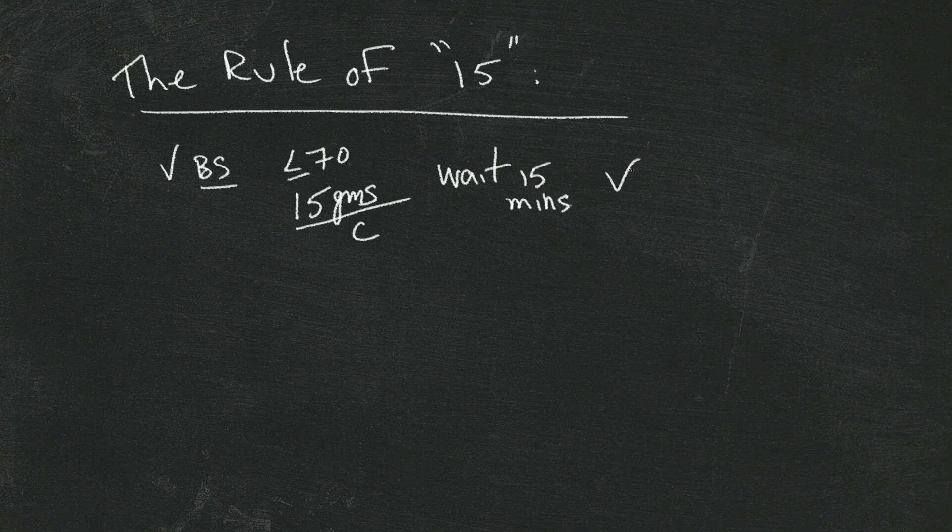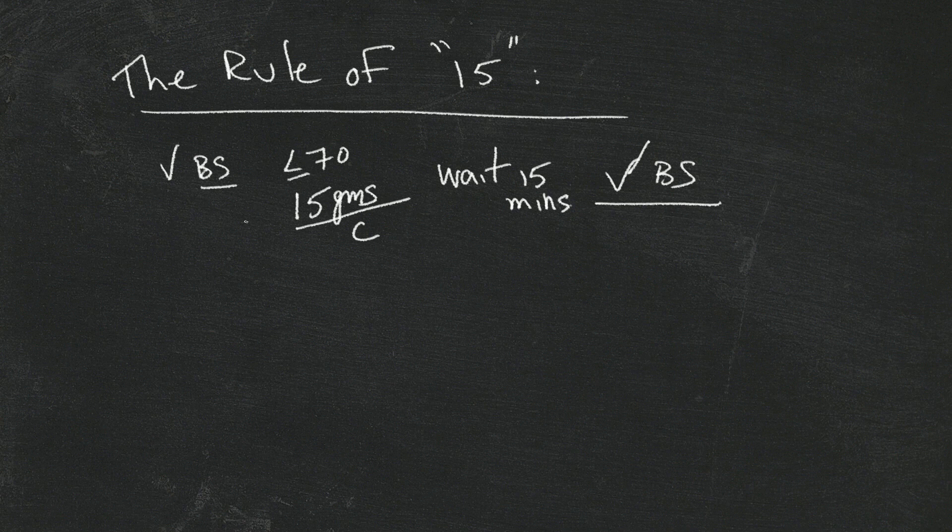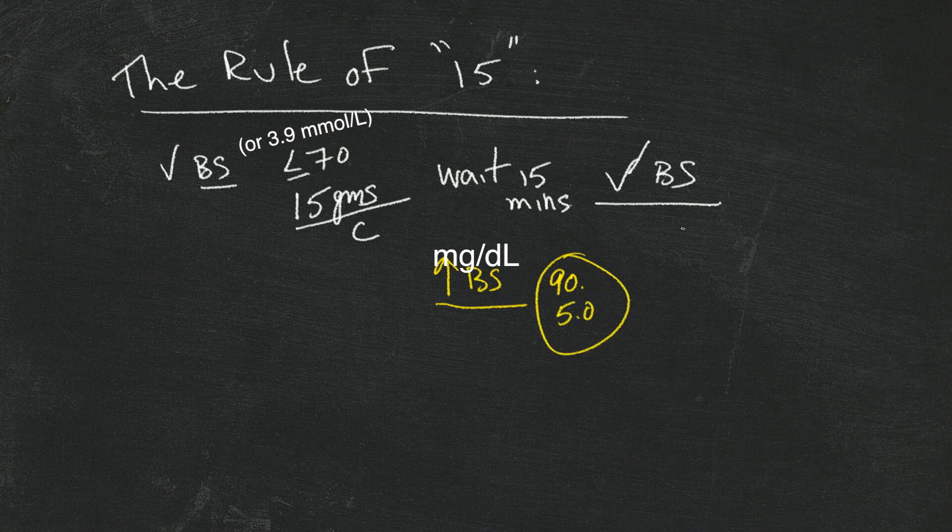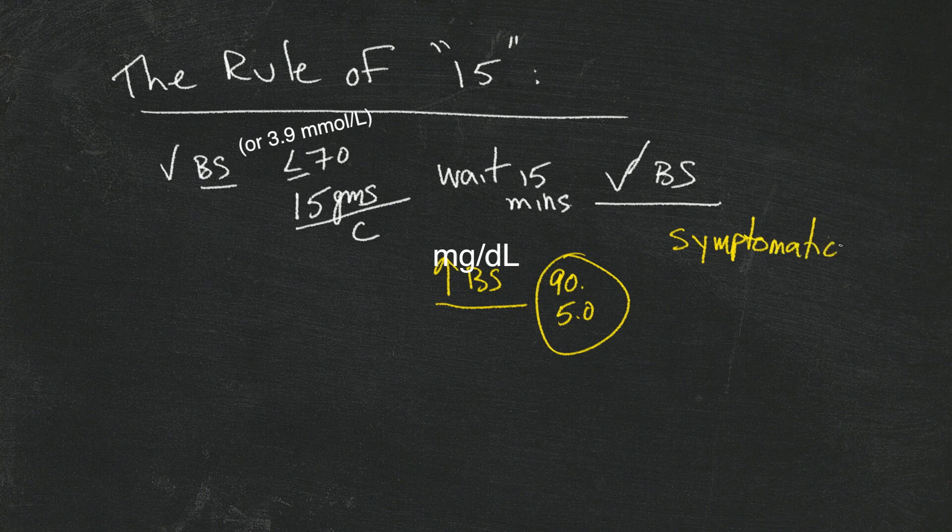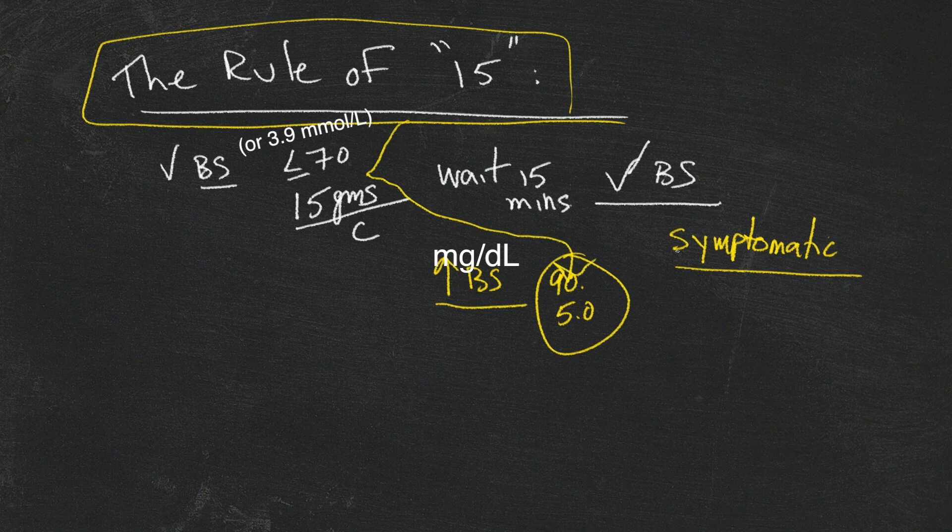And check again. Why? Because all of us with diabetes know that sometimes what ends up happening is that even when our blood sugar comes back up and we're back at 90 or 5.0, we still feel symptomatic. It takes a while for the symptoms to go away. And what the rule of 15 helps us with is to make sure that we stay on track and treat the blood sugar, not the symptom.